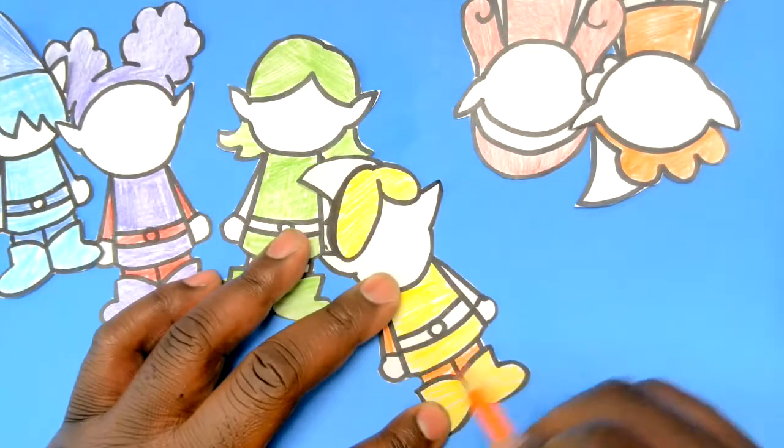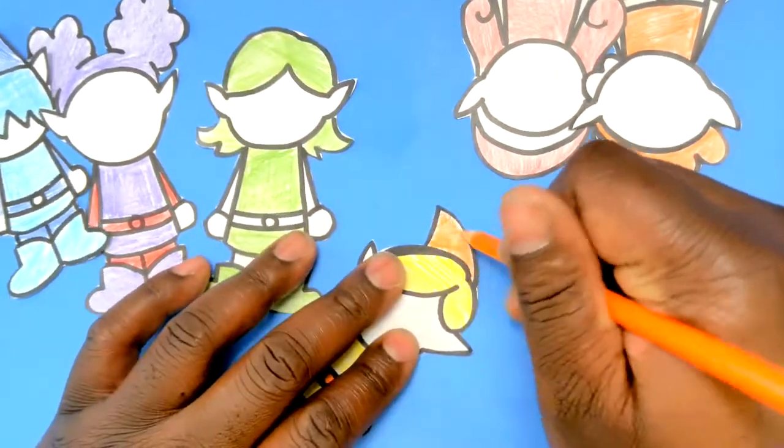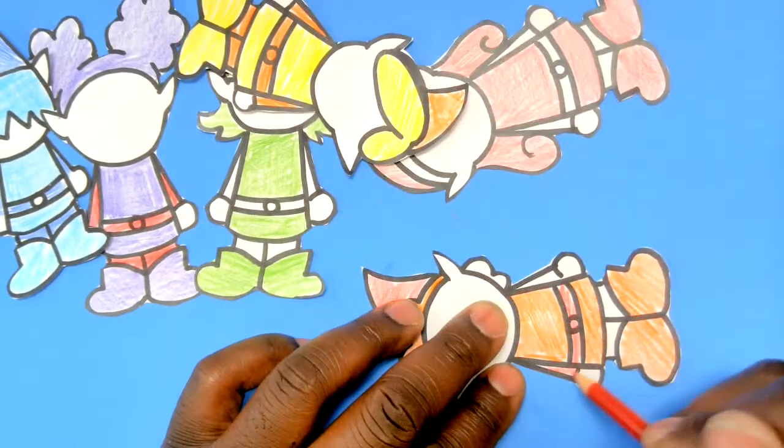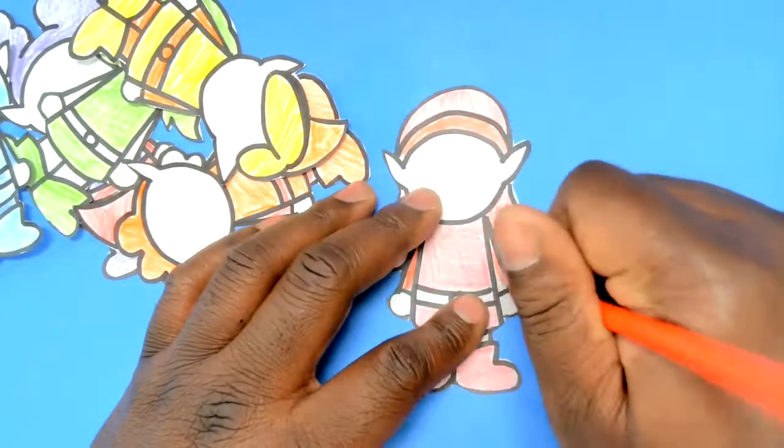But we're going to just start by coloring them. So I'm coloring all six of them. I'm going to make like a little rainbow with all of them. Then after we color them we're going to cut them out.